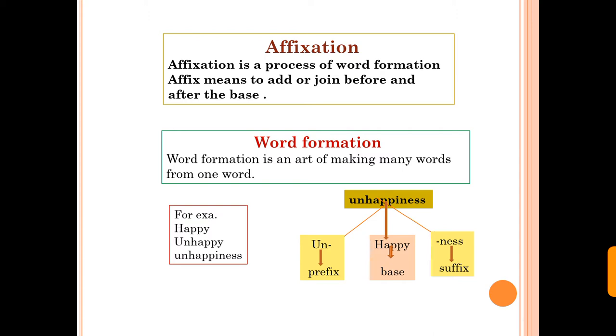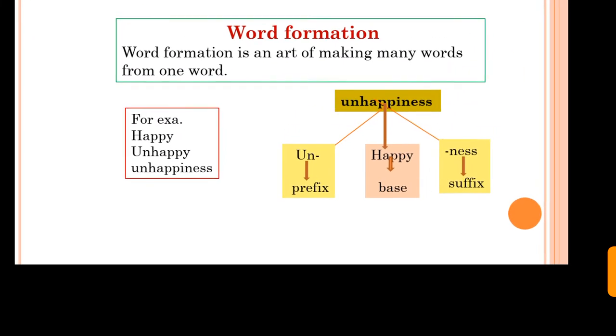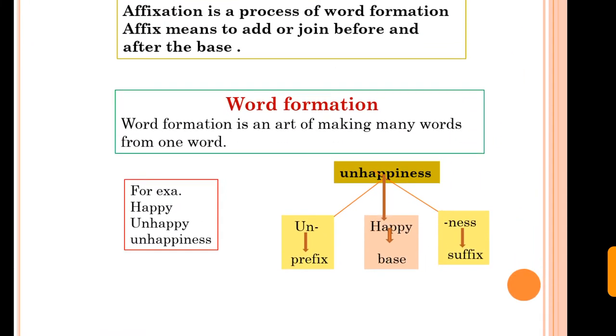Now here one example: unhappiness. In unhappiness, there is un, happy, and ness. Happy is the base of un and ness. Un which adds before the word, so it's called the prefix. And ness, which adds after happy, is a suffix.